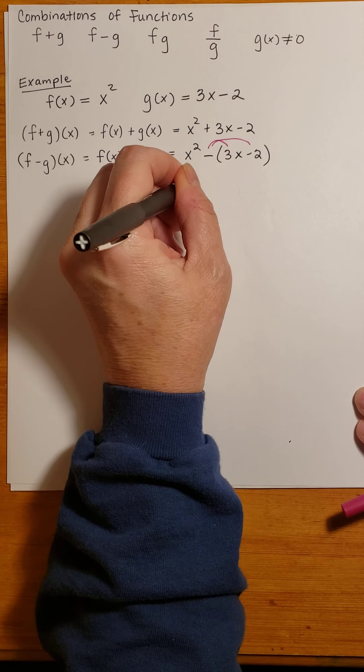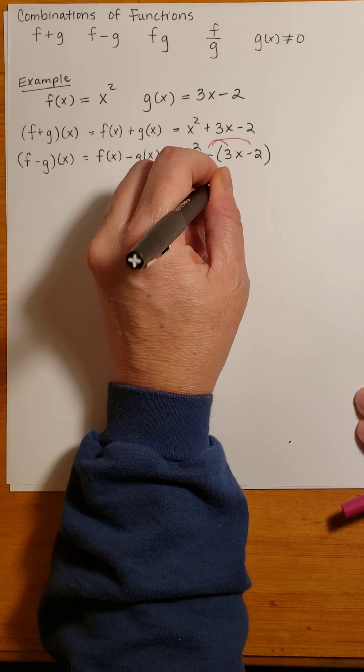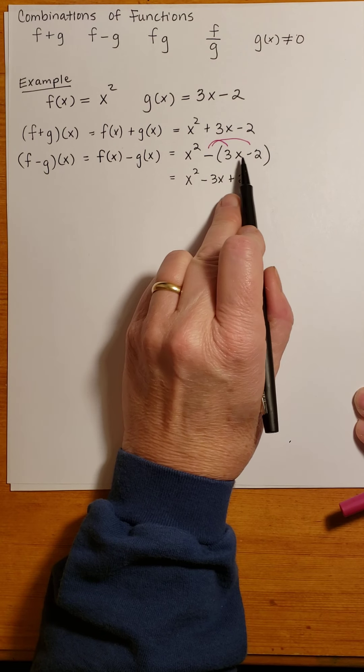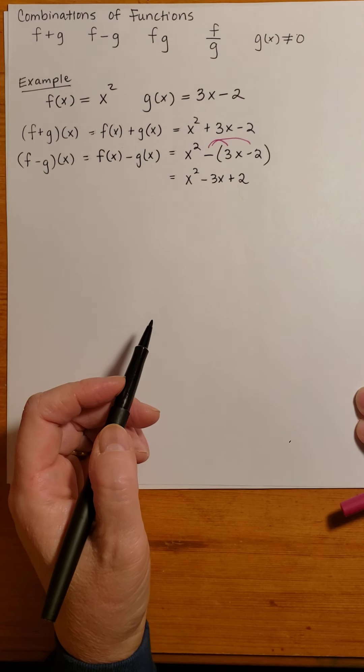So simplified, this becomes x² - 3x + 2, because when I take the negative of negative 2, I get a positive 2.